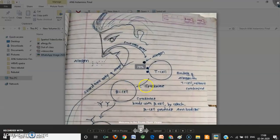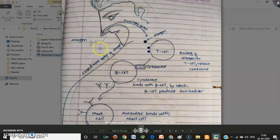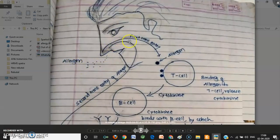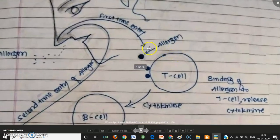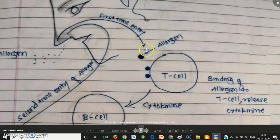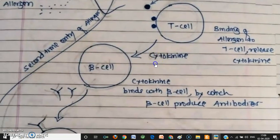Now I'll demonstrate using a diagram how histamine is released from mast cells in the respiratory tract. Consider that an allergen enters the nose for the first time. An antigen-presenting cell processes the allergen, and if it determines the allergen is harmful, it presents the antigen to the T cell. As soon as the allergen binds with the T cell, the T cell releases cytokines.